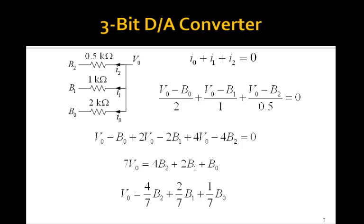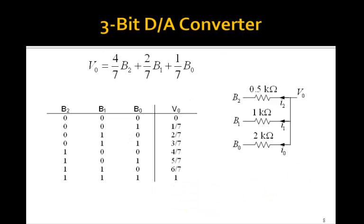And if we divide by seven, we can solve for the voltage V0, 4 sevenths B2 plus 2 sevenths B1 plus 1 seventh B0. And you see, if we put this in a table where B2, B1, B0 can be the eight binary numbers going from 0, 0, 0 to 1, 1, 1, we see that V0, the voltage goes from 0 to 1 in steps of 1 seventh. So this is the analog voltage you would get out of V0.